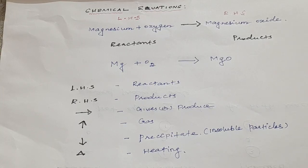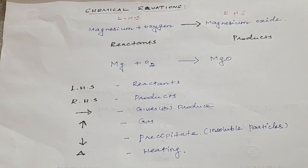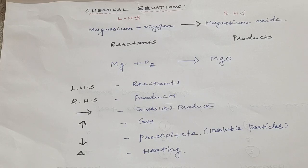LHS — left-hand side — we write reactants. Right-hand side — products. The horizontal arrow indicates 'gives' or 'produces'. An upward arrow indicates gases formed. A downward arrow indicates a precipitate — that means insoluble particles. A small triangle is used for heating — if the reaction requires heating, we put the small triangle above the horizontal arrow.